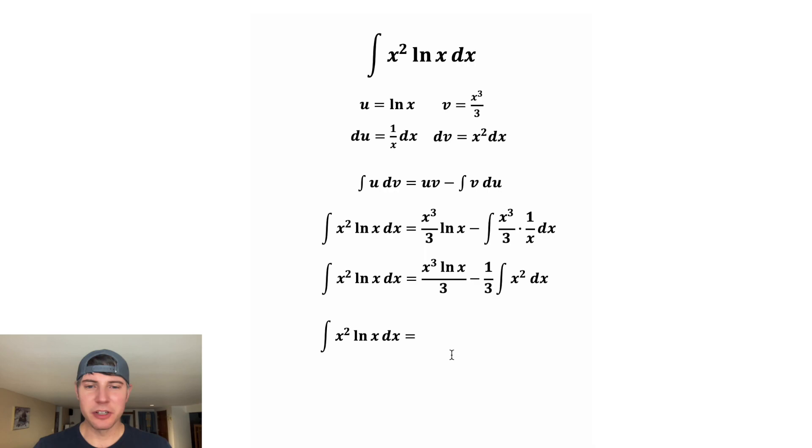And now for the next step, there's nothing we can really do here. Same thing, we can bring down the constant multiple. And then we're going to take the integral. We added 1 to the 2 and then divide it by that. And then we don't want to forget the plus c.